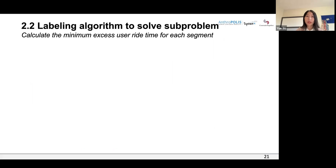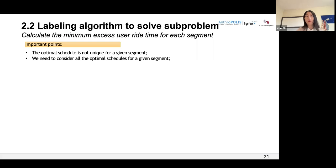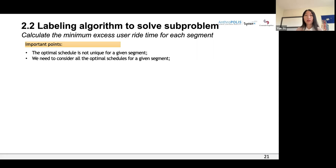We calculate the minimal excess user ride time for each segment because it appears in the pricing subproblem objective. Two important points: first, the optimal schedule with minimal excess user ride time is not unique for a given segment — there may be many optimal schedules with the same minimal excess user ride time. Second, we need to consider all optimal schedules rather than just one, because considering only one optimal schedule may conflict with the next segment when extending the partial path — particularly if the next segment contains a node with a very strict time window. So we must consider all possibilities for optimal schedules.